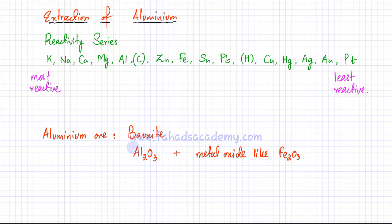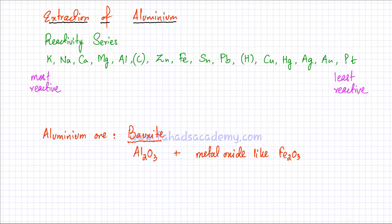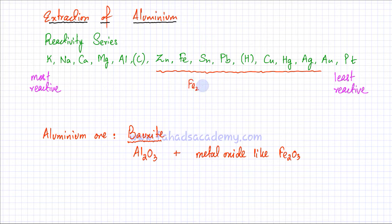When we were generally talking about the extraction of metals, we discussed two ways. Carbon sits in the reactivity series and is a very cheap element. One way is reduction with carbon, but that only applies to elements lower down in the reactivity series compared to carbon. For example, Fe2O3 can react with carbon — carbon being more reactive takes away the oxygens, carbon dioxide is formed, and iron is left as pure metal.